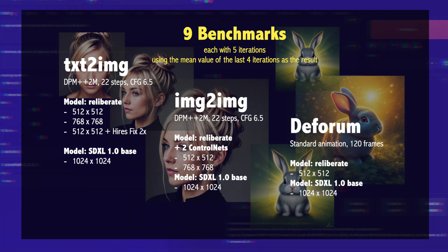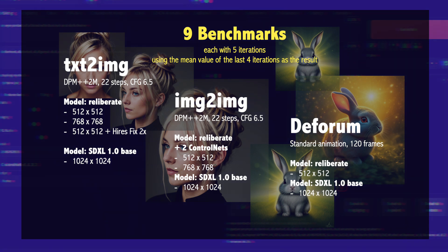Then I made another test with the SDXL 1.0 base model at a resolution of 1024x1024 pixels. Then the same with image-to-image using two ControlNets for the Reliberate model, but not for the SDXL model because it doesn't support ControlNet yet. And finally I rendered the standard animation of the forum with 120 frames — first using the Reliberate model at 512x512 pixels, and then the same with the SDXL model at 1024x1024 pixels.